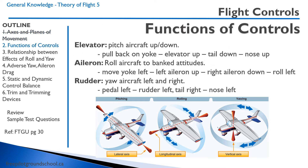Let's talk about the function of the controls. The elevator, which is located on the horizontal stabilizer on the tail, pitches the aircraft up and down. When we pull back on the yoke, the elevator moves up, forcing the tail down, which forces the nose up. The ailerons control roll to banked attitudes.